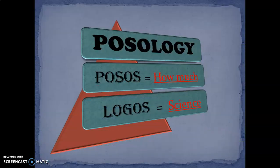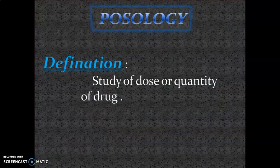The term Posology consists of two Greek words: Posos means 'how much' and Logos means 'science.' So how much quantity of drug has to be taken, and the calculation of that — that science is called Posology. The definition of Posology in short: it is the study of dose or quantity of drug; it is the science or study of dose calculation or quantity of drug.